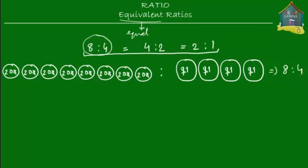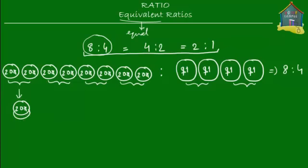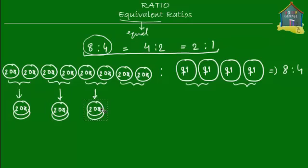Now how do you prove that 8 to 4 is equivalent to 4 to 2? Let's stack 2 coins together and see how many stacks there are. I'm going to take these 2 coins and make a stack — 2 twenty-cent coins stacked into 1 stack. Then I take these 2, another stack; these 2, another stack; and these 2, one more stack. So now these 8 coins are stacked into stacks of 2, giving us 4 stacks.